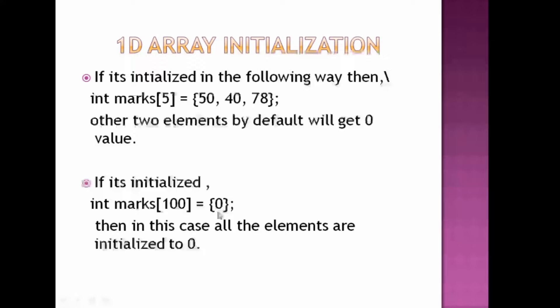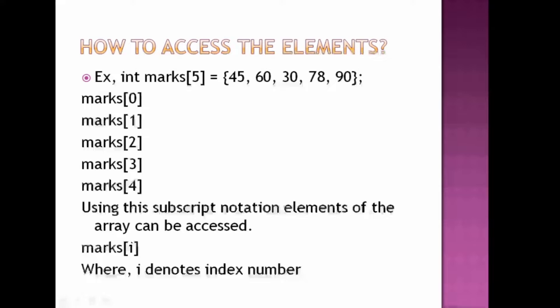How do we access the elements? Taking the example int marks[5] = {45, 60, 30, 78, 90}: we declared one integer array of size 5. Remember, the first element is at index number 0, the second at index 1 — indexing always starts from 0. So marks[0] gives 45, marks[1] gives 60. Elements of the array can be accessed using subscript notation: marks[i], where i denotes the index number. Thanks a lot for watching the video.